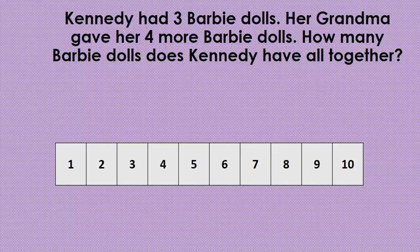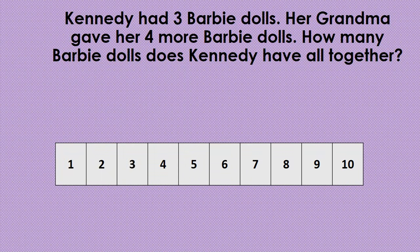We know Kennedy started with three Barbie dolls, so we are going to find the number three on the number path and start there. We know her grandma gave her four more Barbie dolls, so we are going to count forward four.